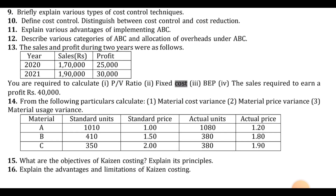Question fourteen: from the following particulars, calculate material cost variance, material price variance, and material usage variance. Question fifteen: what are the objectives of kaizen costing? Explain its principles.